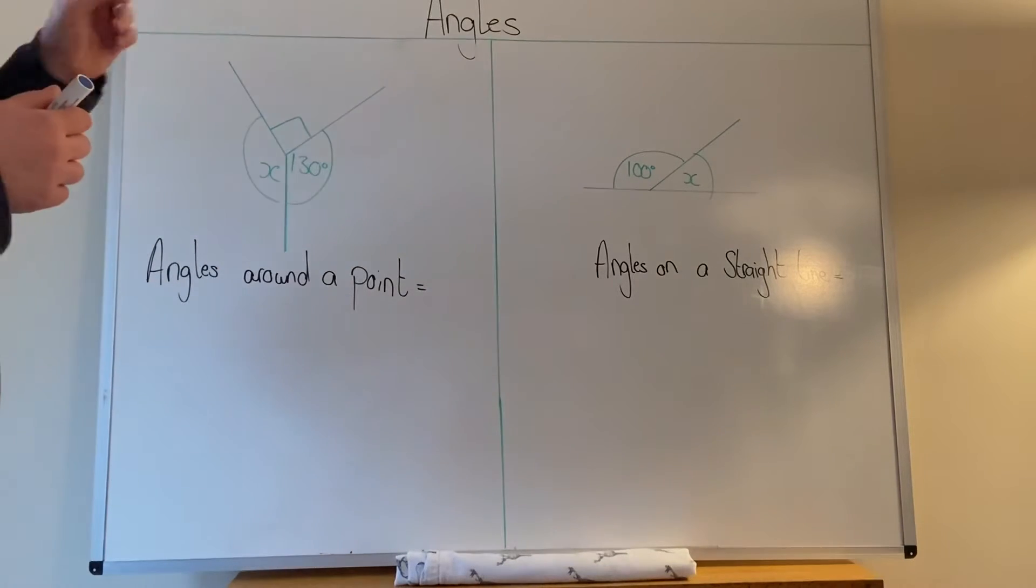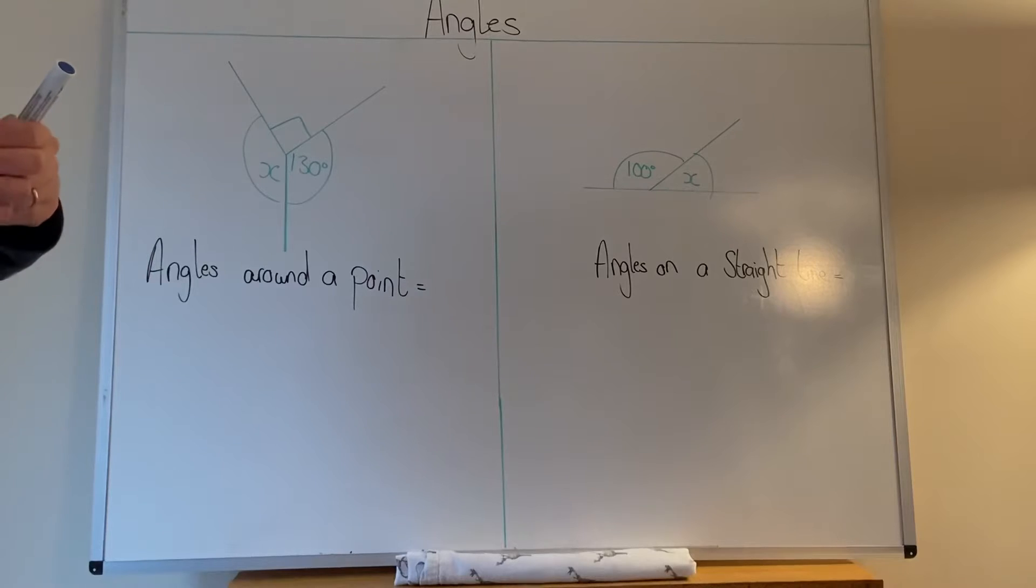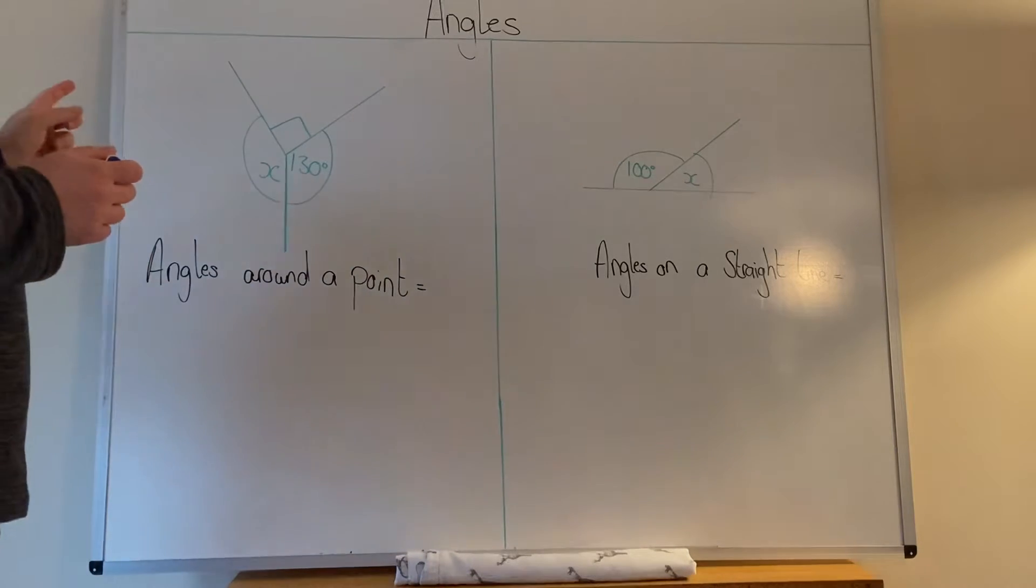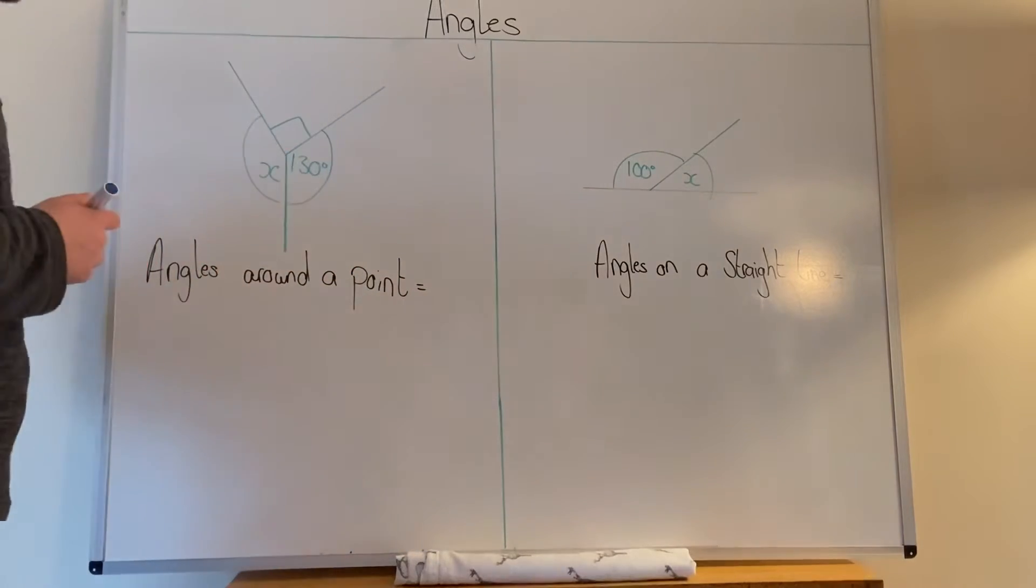Right, welcome back. We're looking at angles still. I'm going to give you two facts there and I'm going to show you exactly what you're supposed to do with them as well. So we've got angles around a point and we've got angles on a straight line. I'm going to look at angles around a point first.